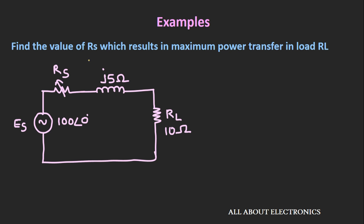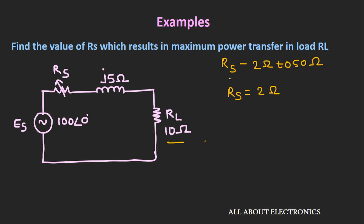In the first example, we are asked to find the value of Rs which results in maximum power transfer across load resistance RL, given that Rs can vary from 2 Ω to 50 Ω. Since the load resistance RL is fixed, we cannot directly apply the maximum power transfer theorem. In cases where load resistance is fixed and we want maximum power across RL, the value of Rs should be as low as possible. Therefore, Rs should equal 2 Ω — the minimum value in the given range.